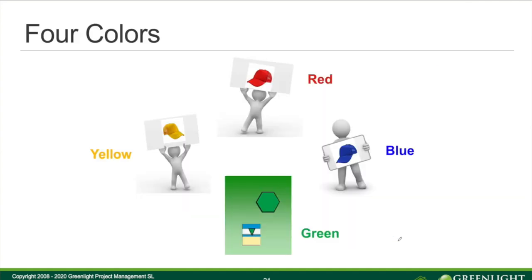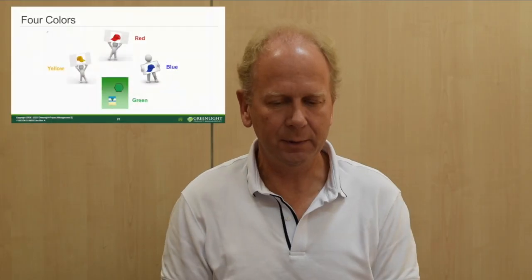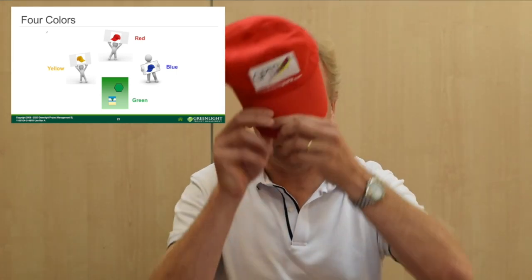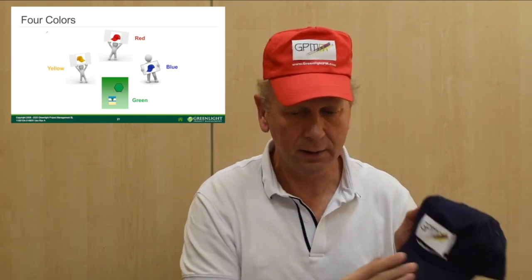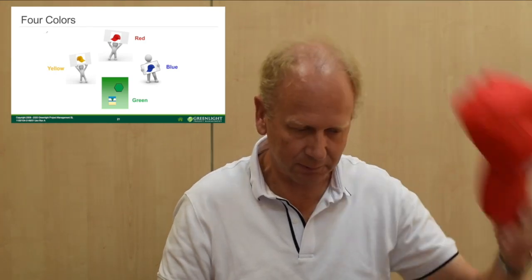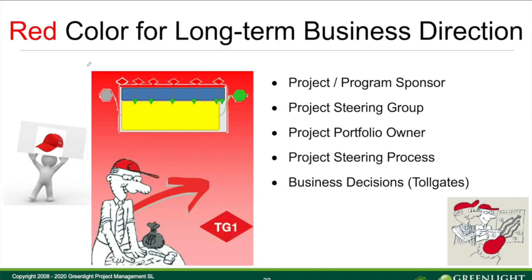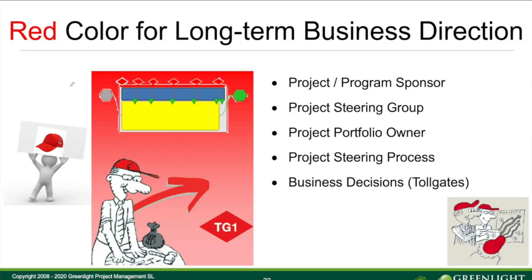Let's start with the four colors. We have the red, yellow, green, and blue color, and all of them represent different things. Here the red color — in one word — means business. It means that we represent the project and the program sponsor, the project steering group on the governance board, the project portfolio owner, the project steering process, and that we also make business decisions.